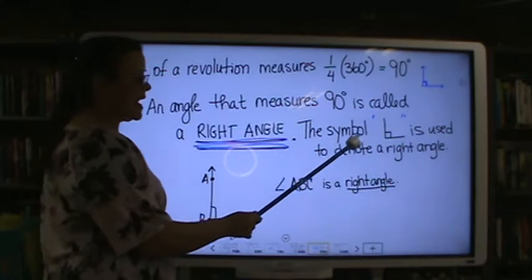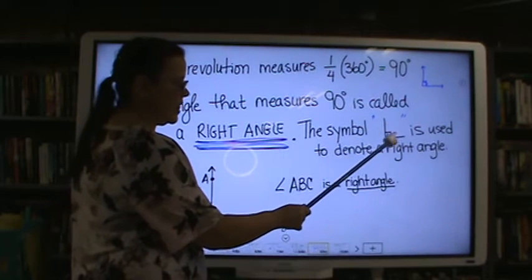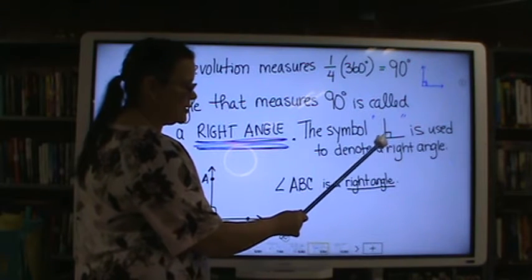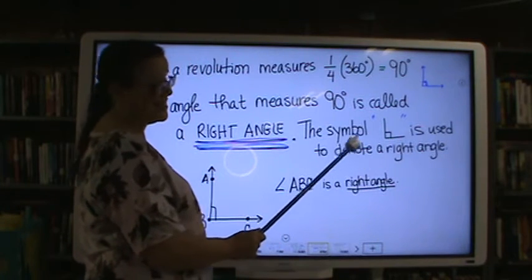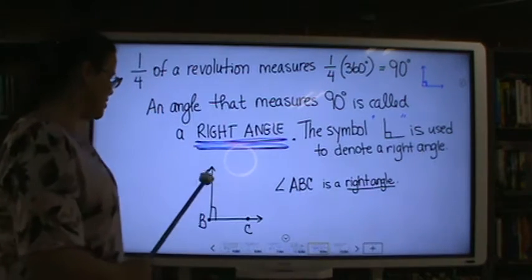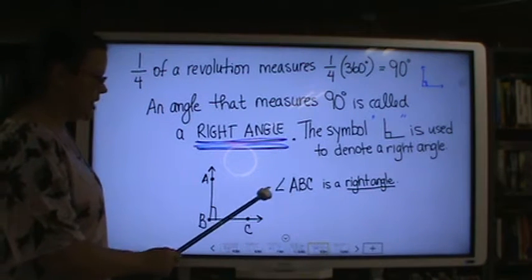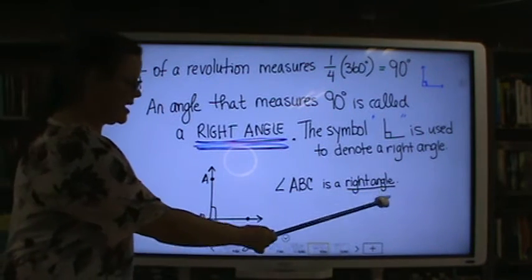The symbol for the right angle is this little L with a little box in the corner of it. It is used to denote a right angle. Angle ABC is a right angle.